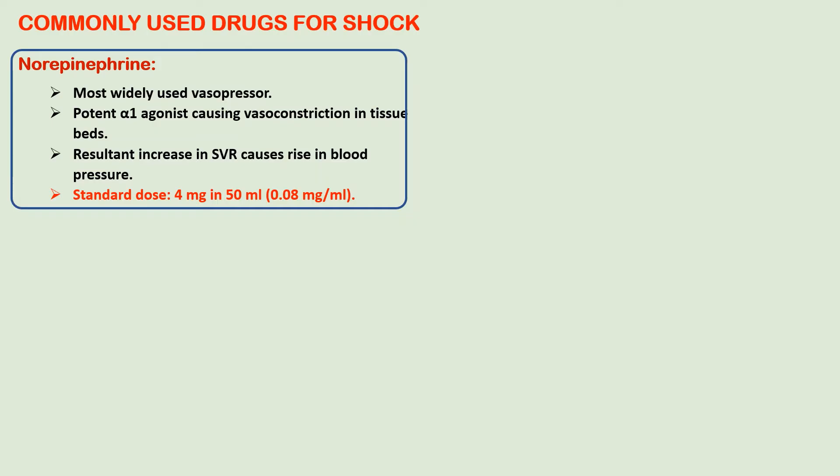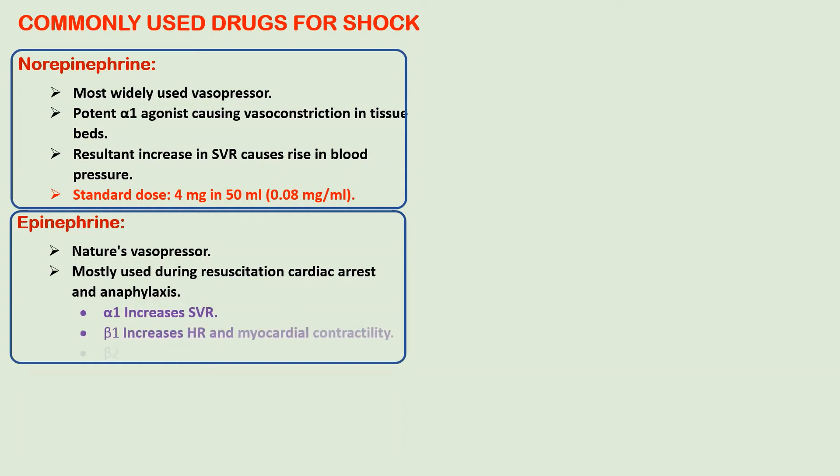Since catecholamines are degraded by MAO and COMT, the preferred route of administration is parenteral. The second drug is epinephrine, also a vasopressor, mostly used during cardiac arrest and anaphylaxis.